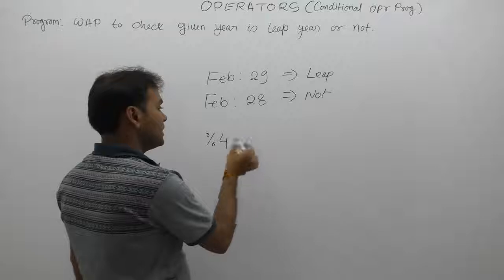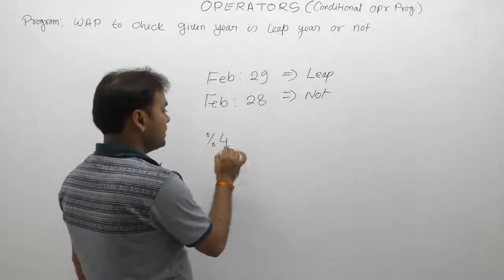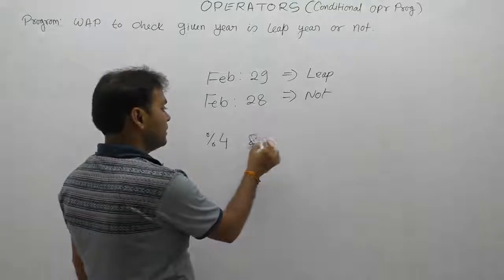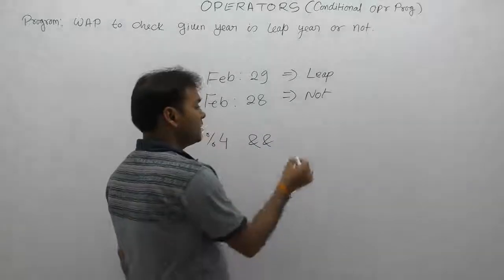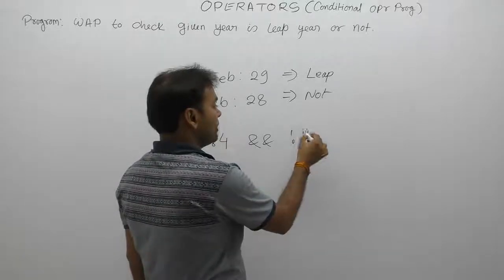But mandatory condition is, if year is multiple of 4, then year should not be multiple of 100.